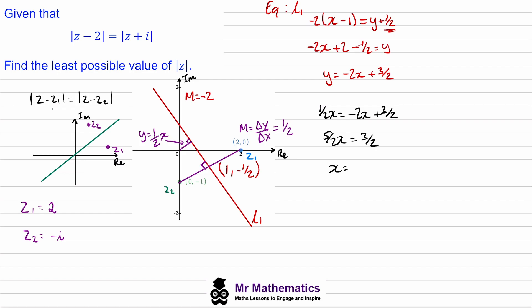So x will equal 3/5, and this is the x value at this point. We can work out the y value using this equation by just dividing it by 2, so the y value will be 3/10.